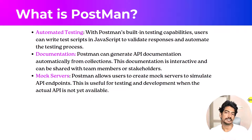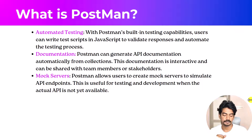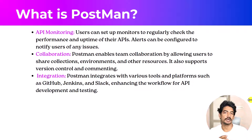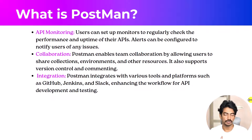Documentation in Postman is interactive documentation - you can share collections and share the document. Mock server - if an API is not ready but you know the data, you can use mocking. We also have API monitoring - if you want to know about API downtime, use API monitoring. Collaboration allows you to share collections or other resources. For integration, we can run Postman collections using Newman, which is the Postman command-line tool.